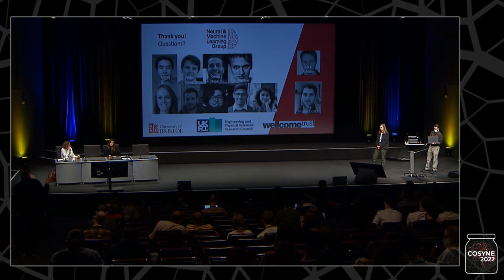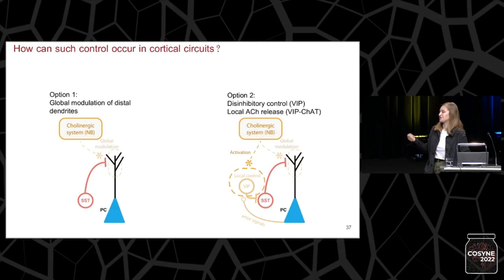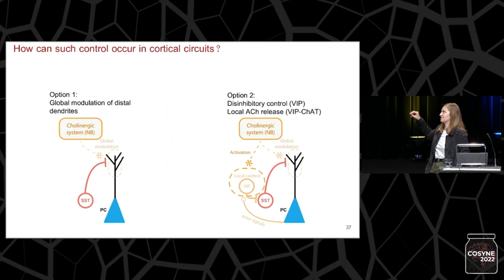Follow-up question: If cortical areas have specific functions, could the same signal have both a local gain modulation effect and a wider effect — is that how you're thinking about it at the level of biology? Response: That is slightly less clear to us. It could be the case that if we involve the local interneurons, they may be responding to the global signal, but their own activity would be informed by what's happening in their surrounding area.